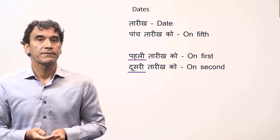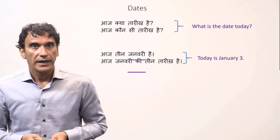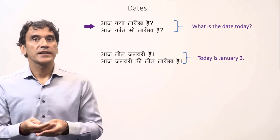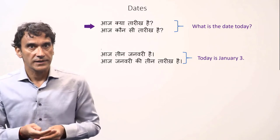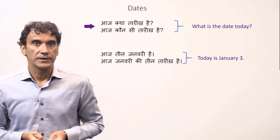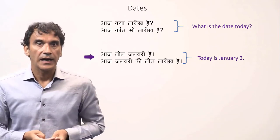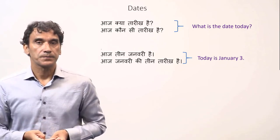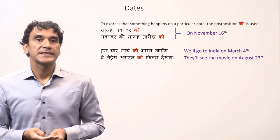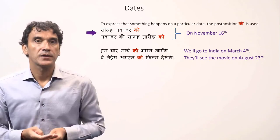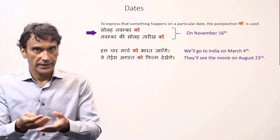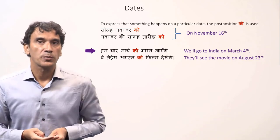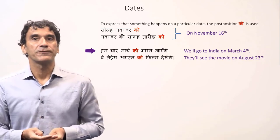Here are some example sentences for asking and telling dates. 'Aaj kya tarik hai' or 'aaj kaun si tarik hai' both mean 'what is the date today'. 'Aaj teen january hai' or 'aaj january ki teen tarik hai' both mean 'today is January 3rd'. As mentioned, dates take the postposition 'ko': '16 november ko' or 'november ki solahveen tarik ko' means 'on November 16th'. 'Hum char march ko bharat jaayenge' means 'we will go to India on March 4th'. 'Weh 23 august ko film dekhenge' means 'they will see the movie on August 23rd'.